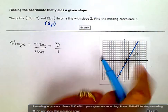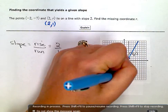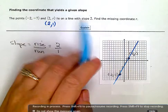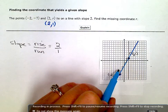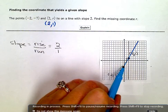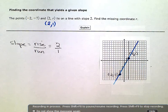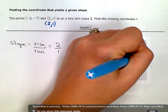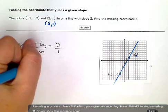The points (-2, -7) and now I know (2, 1) both lie on a line with slope 2. Here's my slope: up 2 over 1, up 2 over 1. There's my little slope staircase. So the missing coordinate is 1.